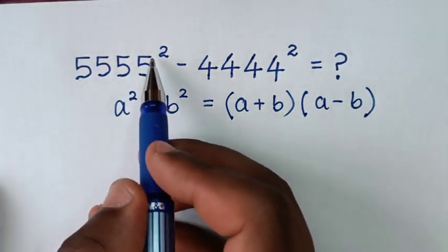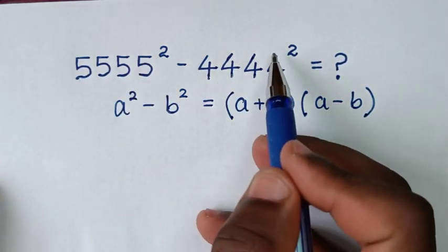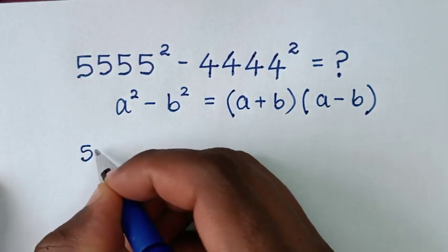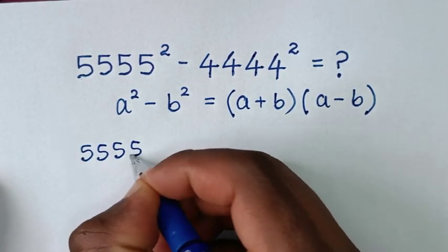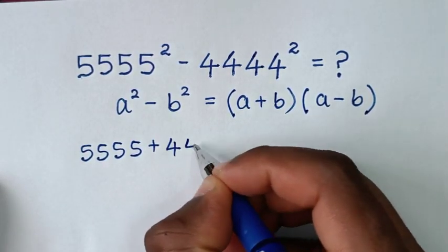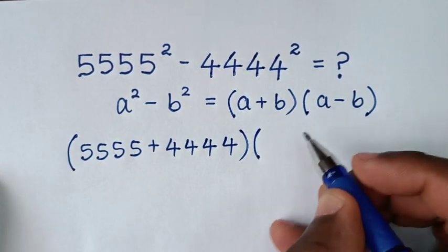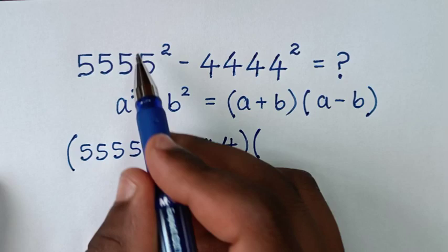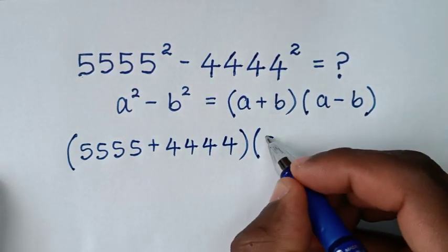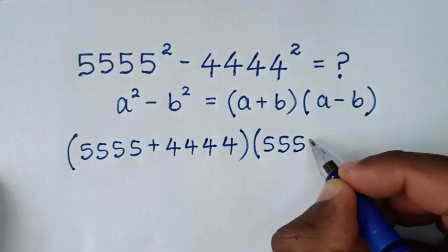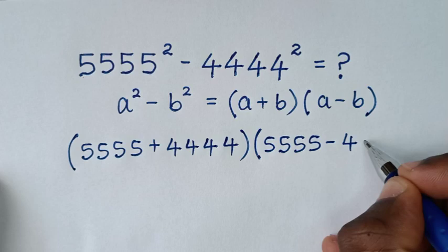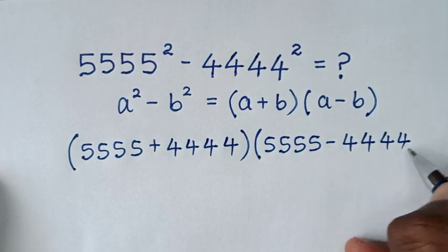So for a + b it will be this plus this, which is (5555 + 4444). Then times (a - b), which will be this minus this, so (5555 - 4444).